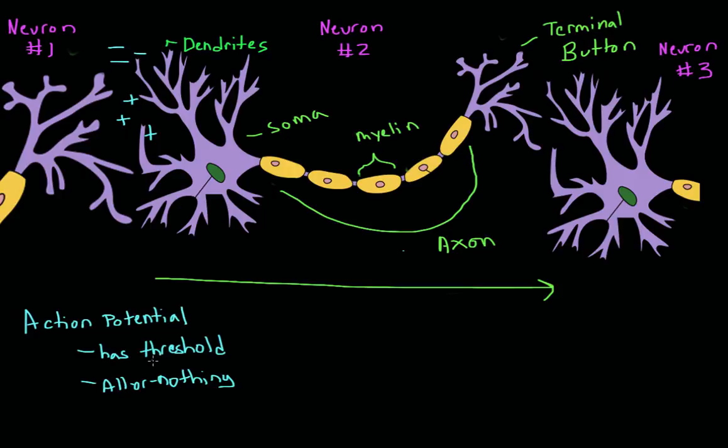So the action potential is always the same intensity. No matter how far the excitatory signals move it above the threshold, it is always the same size.